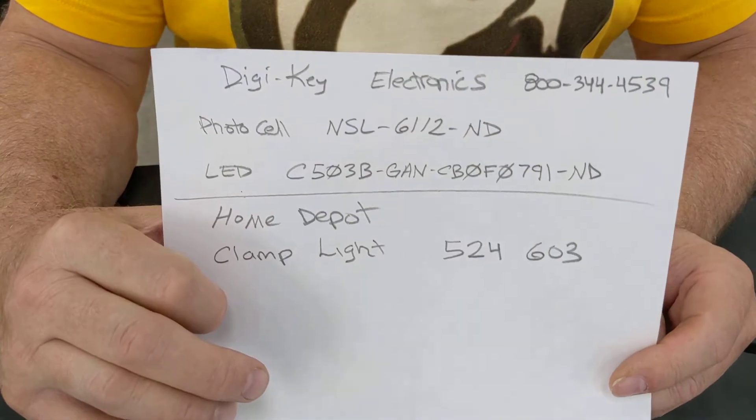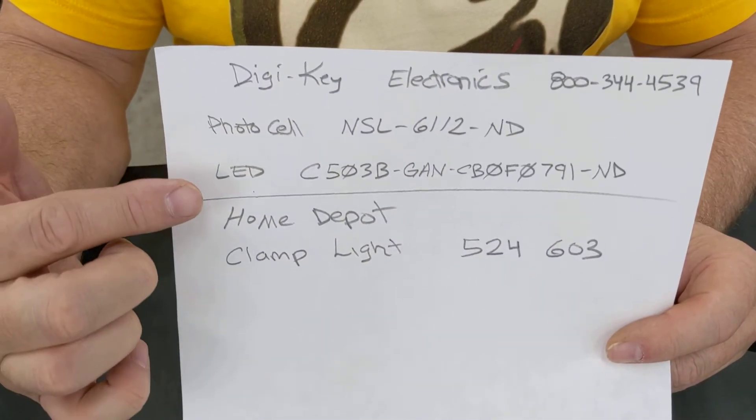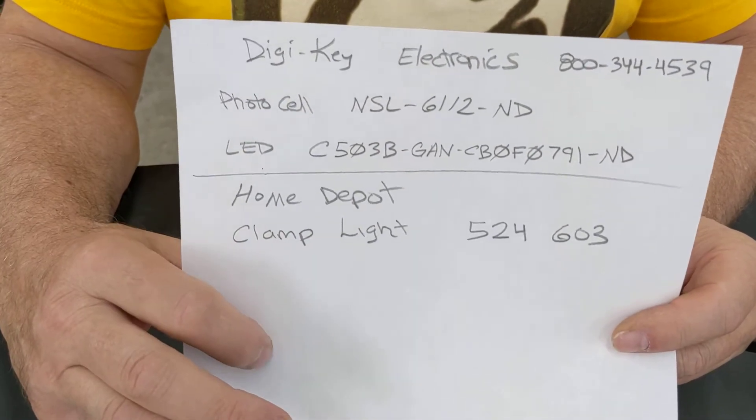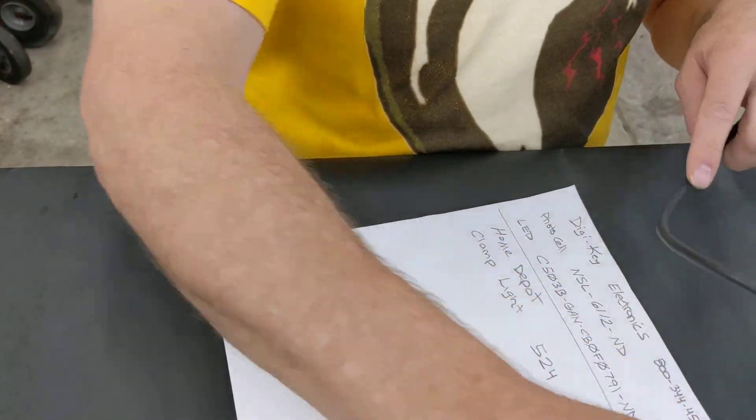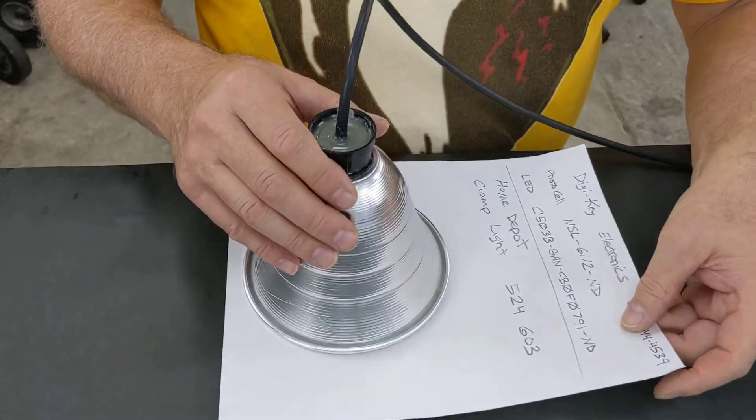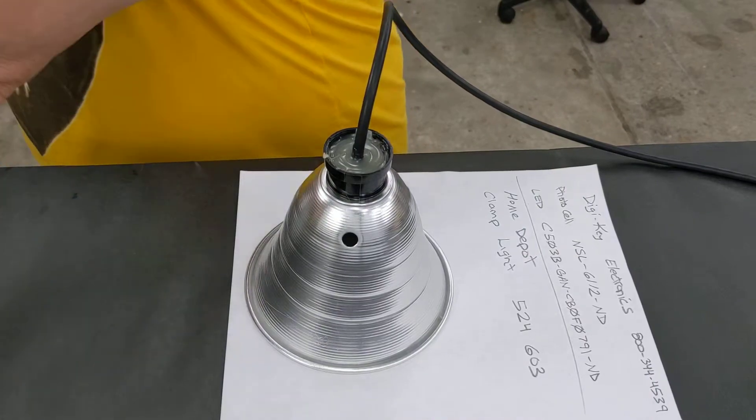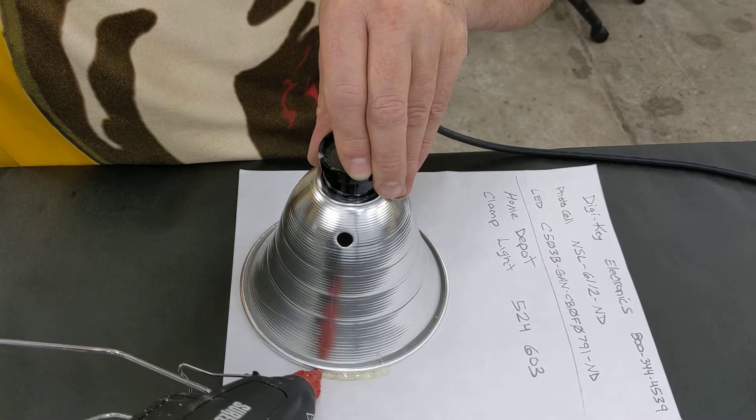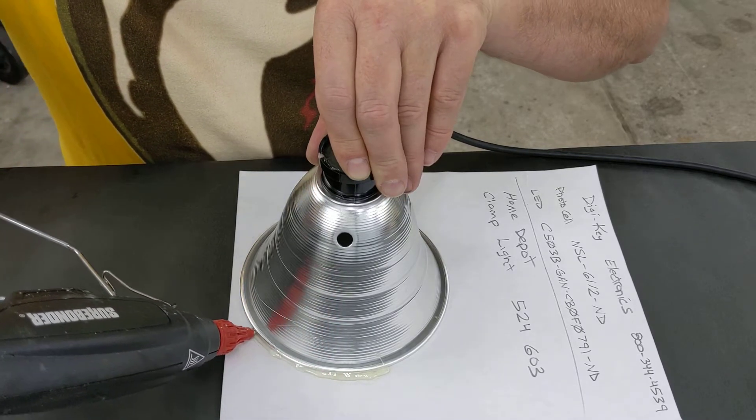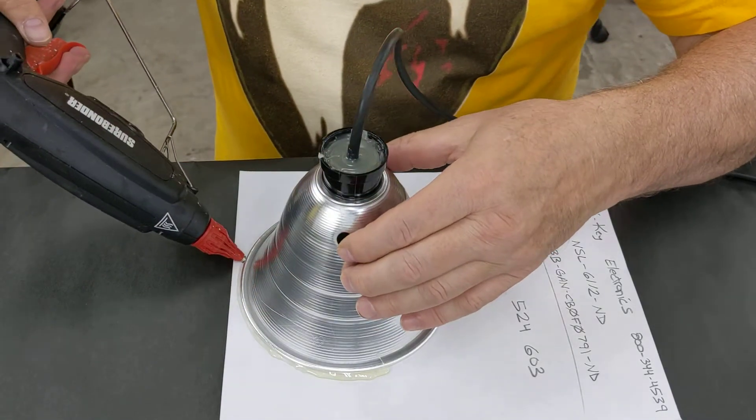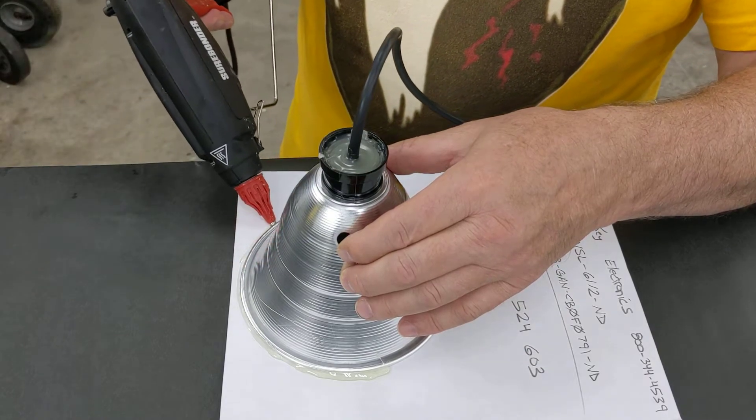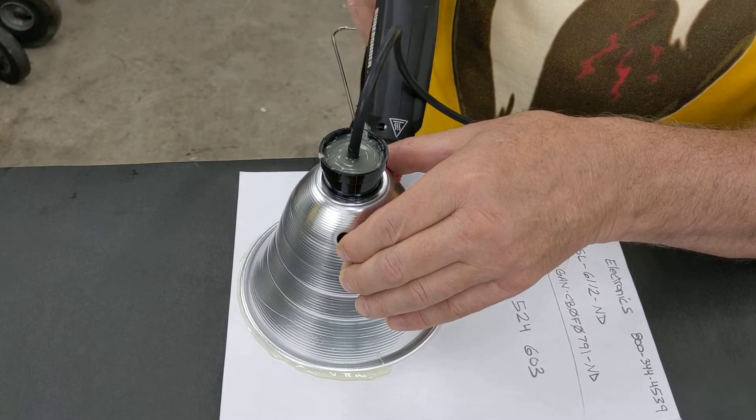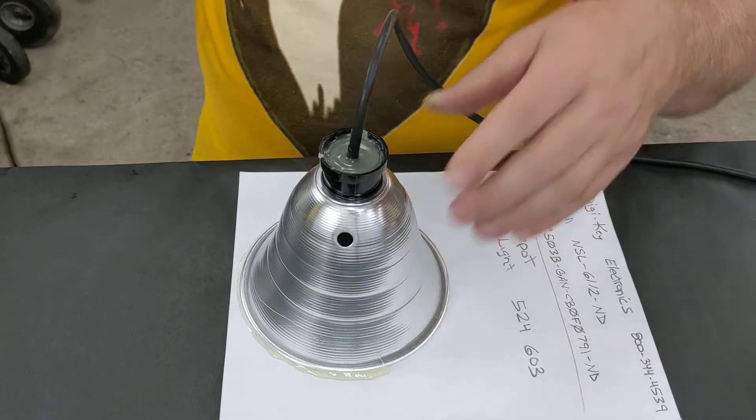There's the part number for the photocell, the LED, and the clamp light from Home Depot. You can pause on that if you want to get those numbers. I'm going to use this piece of paper to glue the light fixture on. I'll run a bead around it with the hot melt. There's probably other adhesives you could use, I just find hot melt pretty convenient, although it does take a long time to cool. If you need to take this paper off it does come off.